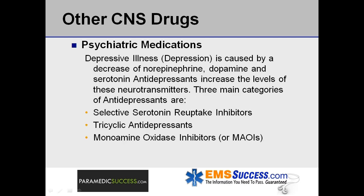Depressive illness is caused by a decrease of the neurotransmitters norepinephrine, dopamine, and serotonin in the brain that are responsible for mood. Antidepressants work by stimulating chemical changes that increase the levels of these neurotransmitters. The three main categories of antidepressants are selective serotonin reuptake inhibitors, tricyclic antidepressants, and monoamine oxidase inhibitors, or MAOIs.